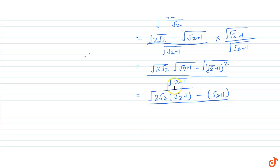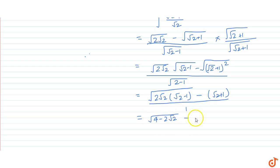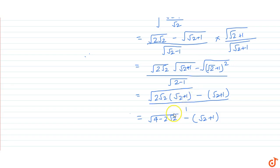This gives us the square root of 4 minus 2 root 2, minus (root 2 plus 1). I made a mistake here — we have root 2 plus 1, so here also we have root 2 plus 1, and here root 2 plus 1, and here also plus 1. And this is what we have on our right hand side. Hence our question is proved.